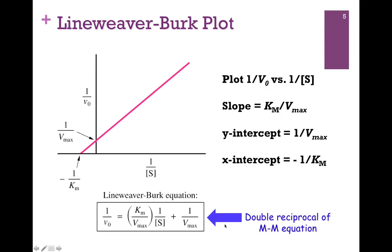Here's our Lineweaver-Burk plot. We've plotted 1/V0 versus 1/[S] and we have a straight line, so now we can do a line of best fit and fit all of our data points in a very accurate way. From the slope we get Km/Vmax, the y-intercept is 1/Vmax, and the x-intercept is −1/Km. So now we have a more accurate way of determining these constants. We simply plot our points, do a line of best fit, and the y-intercept gives the inverse of Vmax. We find the x-intercept, take the negative inverse, and we have Km. You could also determine Km from the slope, but it's a little more accurate to determine it directly from the x-intercept.